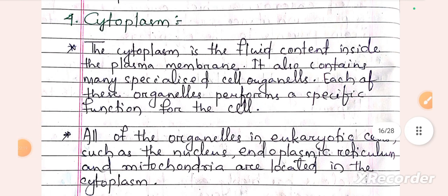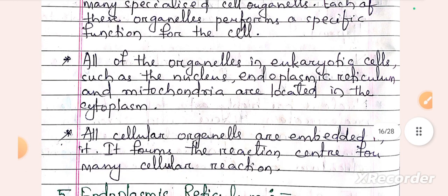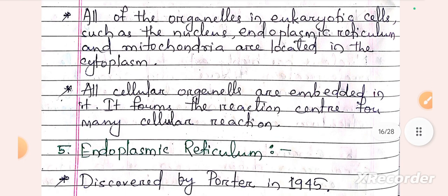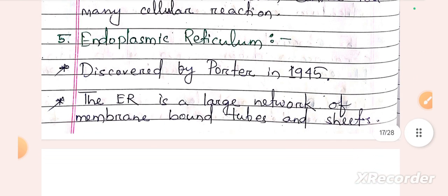The cytoplasm is the fluid content inside the plasma membrane. It contains many specialized cell organelles. All the organelles in eukaryotic cells — such as the nucleus, endoplasmic reticulum, mitochondria — are organelles present in the cytoplasm. All cellular organelles are embedded in it, and it forms the reaction center for many cellular reactions.